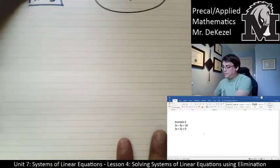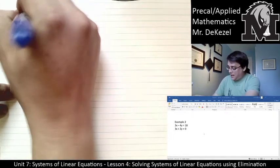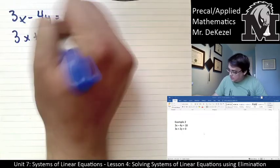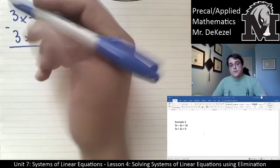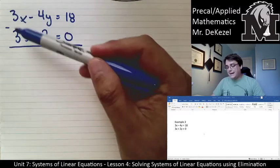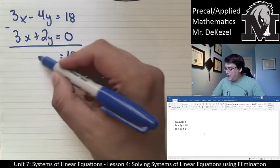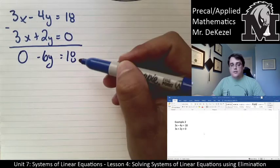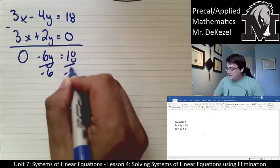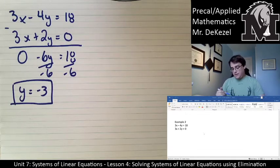Instead of the y's being set up on top of one another, this time we have the x's being the same. We have 3x − 4y = 18 and 3x + 2y = 0. We set this up like a subtraction question because we want to eliminate x and find y. 18 minus 0 is 18; −4y minus 2y is −6y; 3x minus 3x is 0. So −6y = 18, divide both sides by −6, and y = −3.